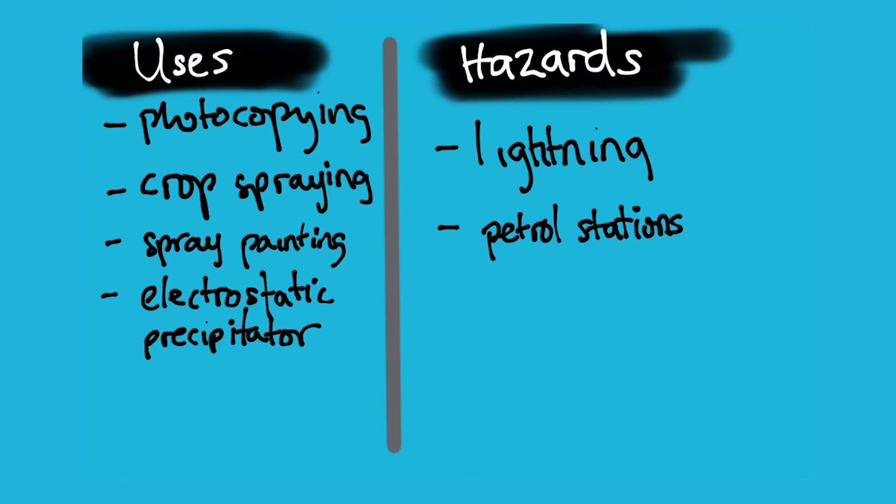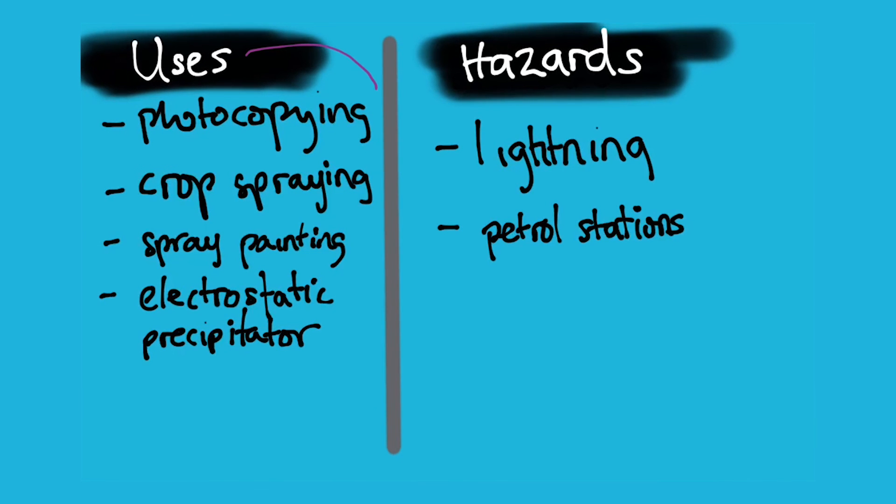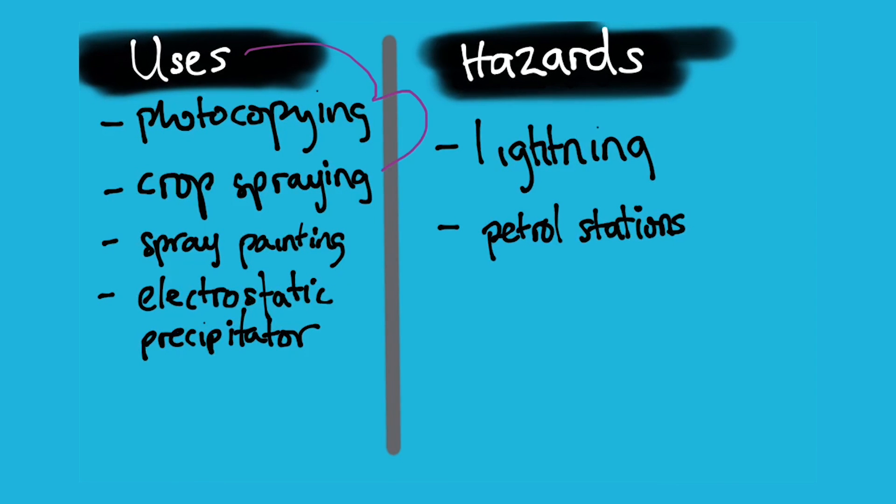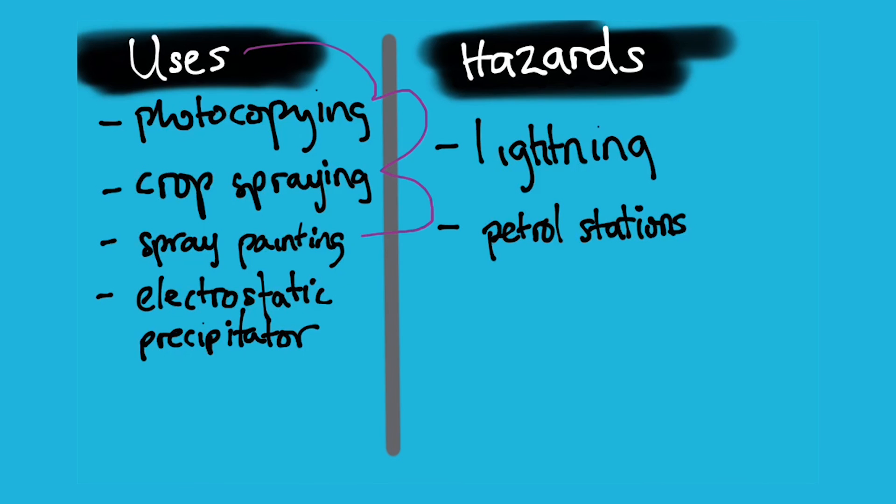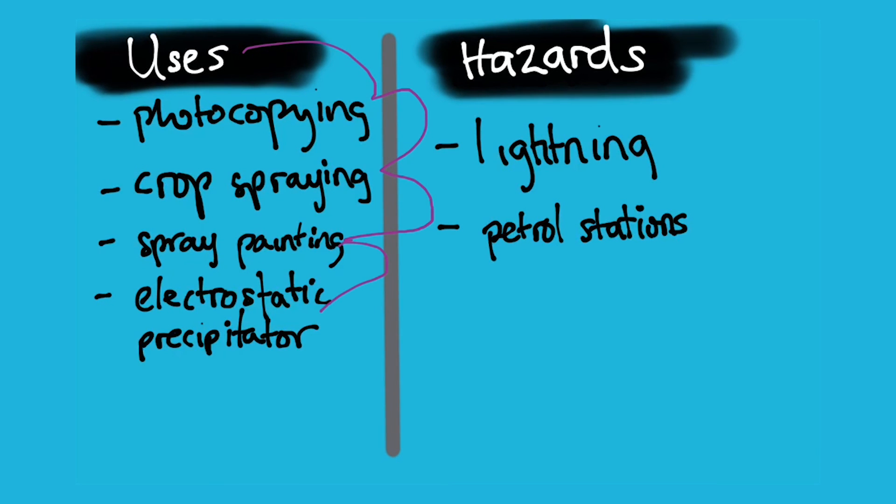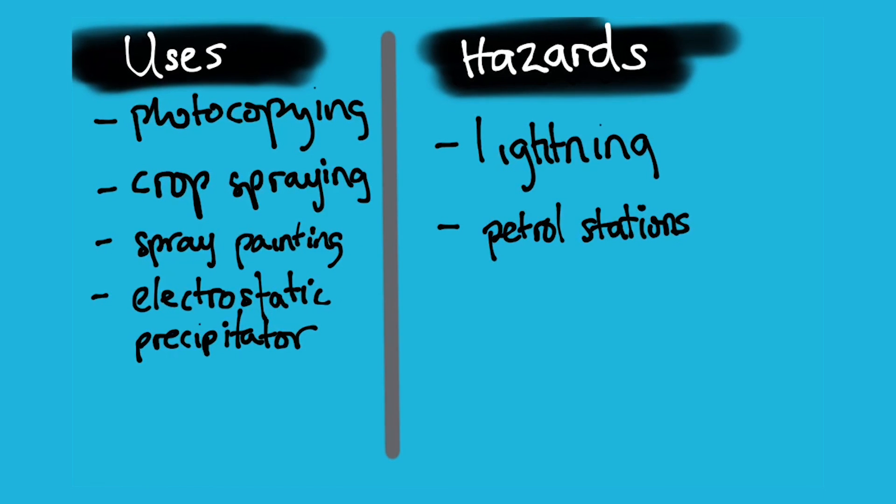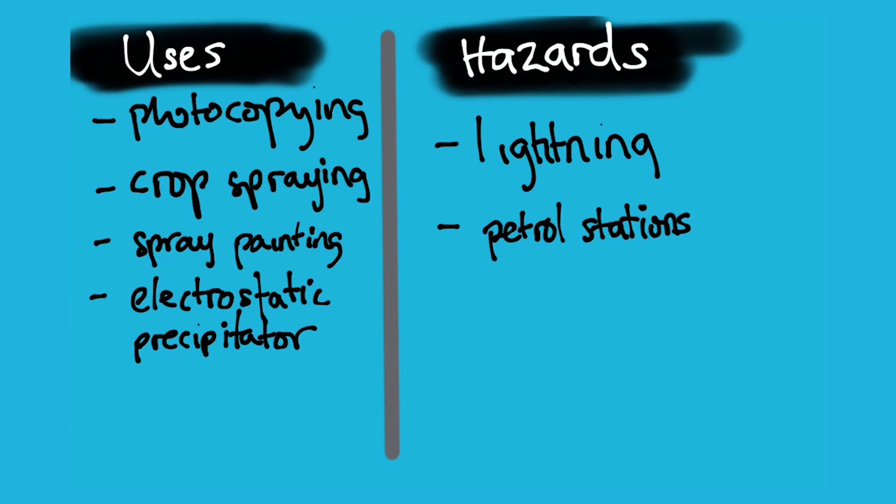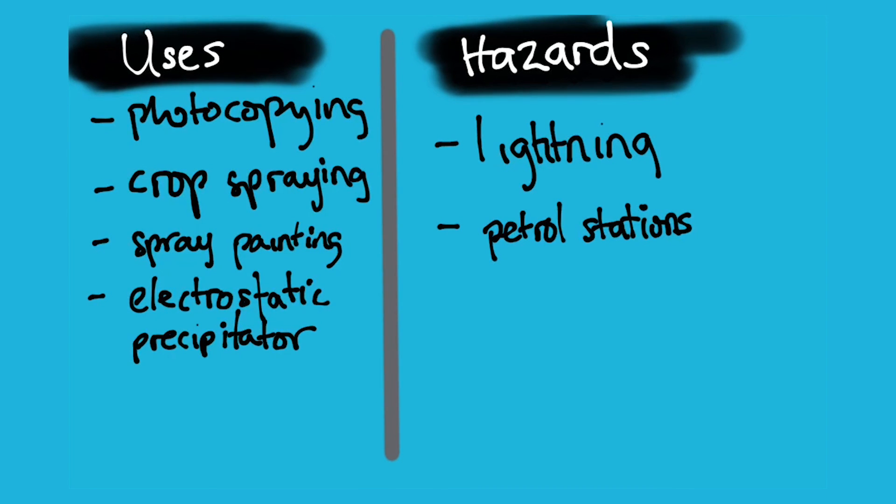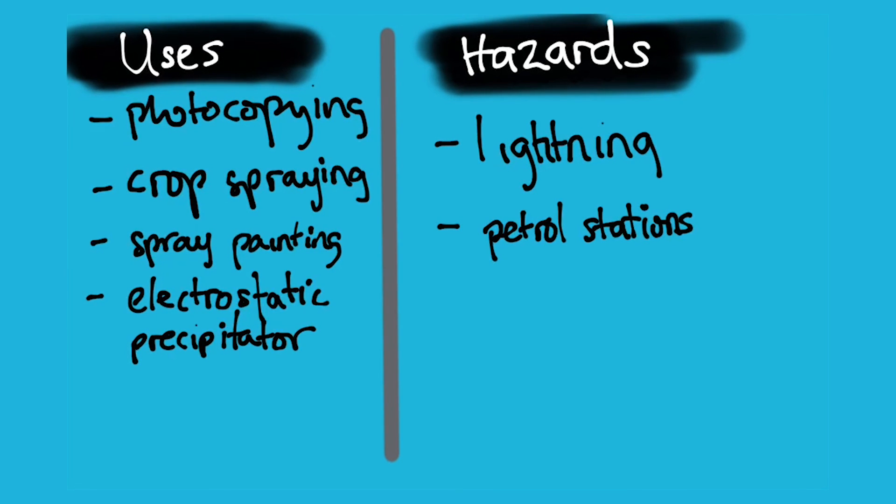Uses. Hazards. You need to be able to see these things. I spoke about some of the uses that you can check out already. Photocopying. Crop spraying is new. Spray painting. And we talked about that. Electrostatic precipitator. We mentioned that. So look up those. Just see how it works a little bit. But they may just ask you for the lists.